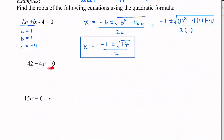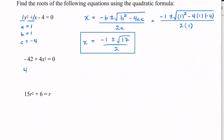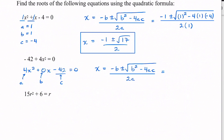For the next example, I already have it written as equals zero on one side, but it's not in the right order. I want x² terms first, then x terms, then the constant. So I'll write it as 4x² — there are no x terms, so I can say there's 0x — then minus 42. So a is 4, b is 0, and c is negative 42.